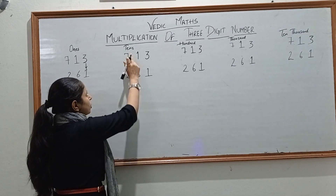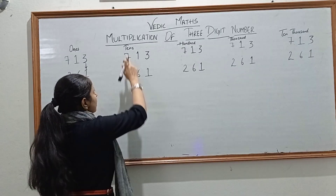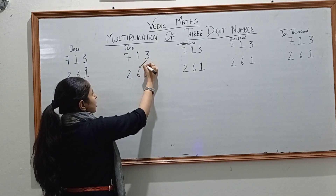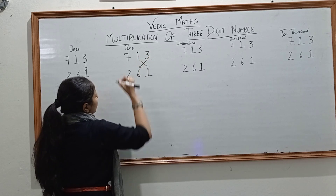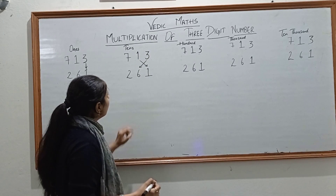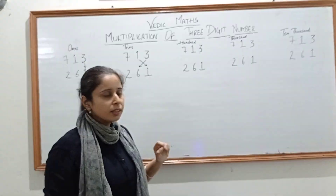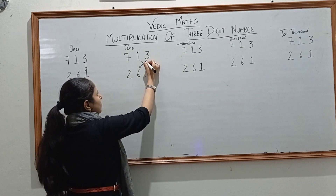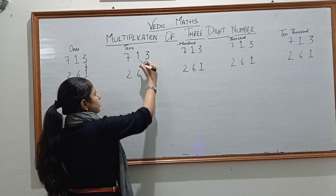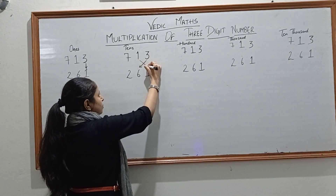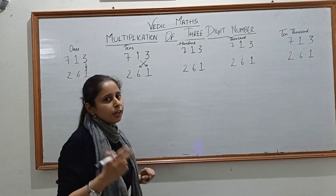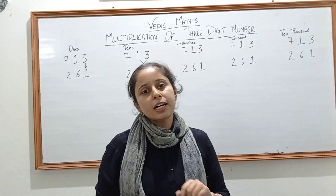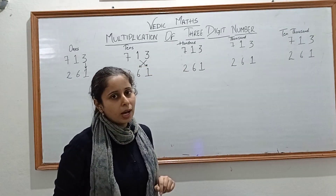The digit on the 10th place will be found using cross multiplication: 3 into 6 and 1 into 1. You have to follow the cross multiplication method here. Multiply 3 into 6 and 1 into 1 — here you will get 2 products. Add the 2 products and you will get 1 number.